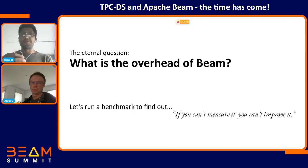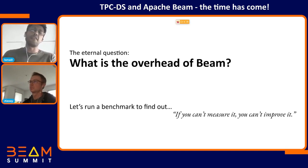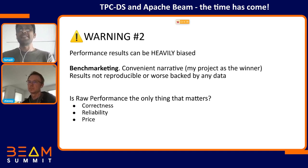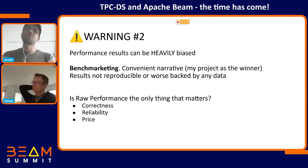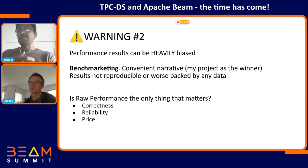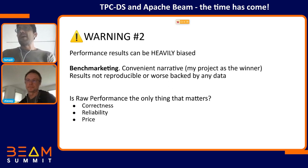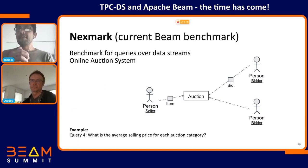The real question is: what is the overhead of Beam as a translation layer? Our first approach was to run a benchmark to measure and compare and see if we can improve it. A second warning here: performance results can be heavily biased and it's common that performance serves the purpose of a marketing narrative. Not many projects have reproducible tests or data. In the end, it's not only raw performance that matters — also correctness of results, reliability, and sometimes price. In Beam we already had a benchmarking system called Nexmark.